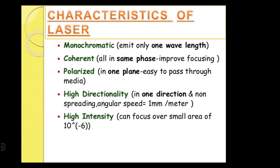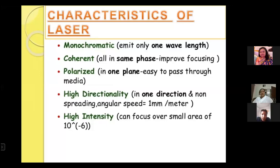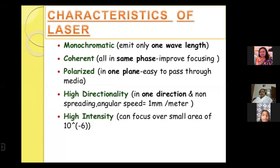Polarized means it is in one plane. If you have a normal bulb or a normal torch, the light goes in all directions. But if it is polarized, it will pass in a particular plane. High Directionality means unidirectional — all photons move in one direction. The last property is High Intensity. If a lot of photons are in one direction, in one phase, then the intensity of light will increase.